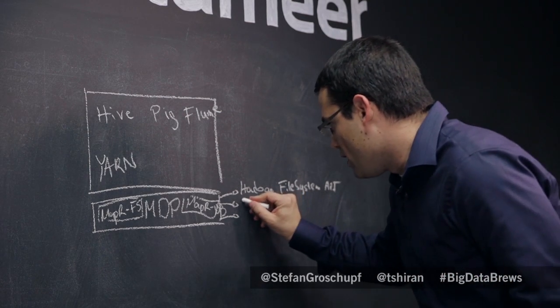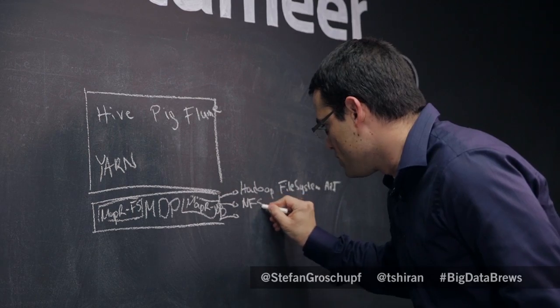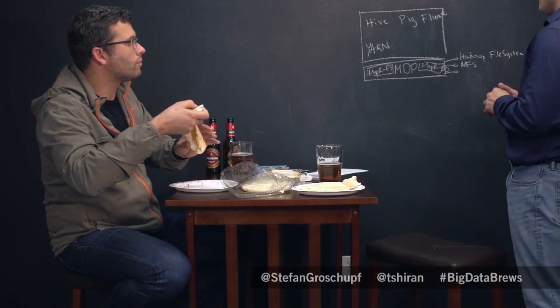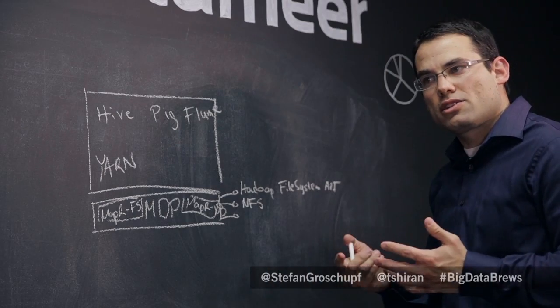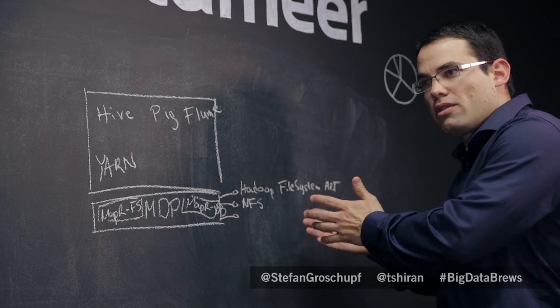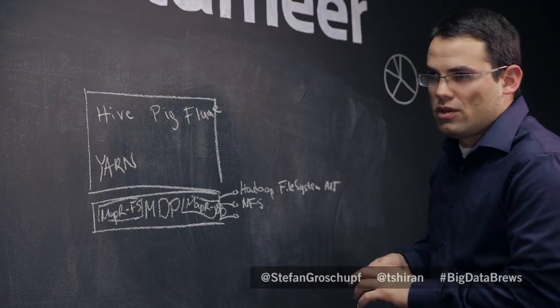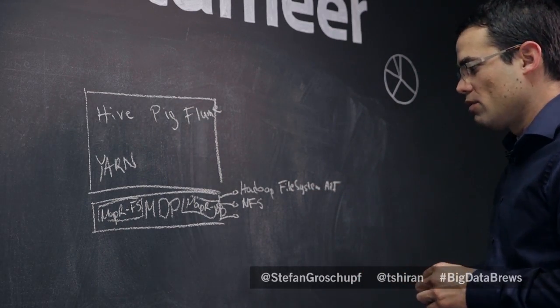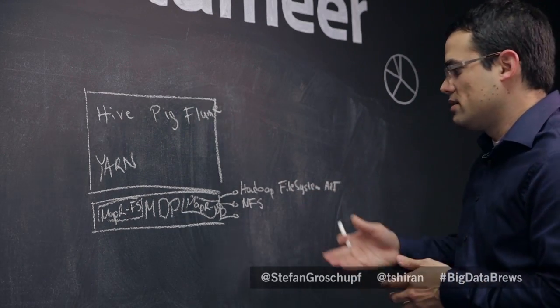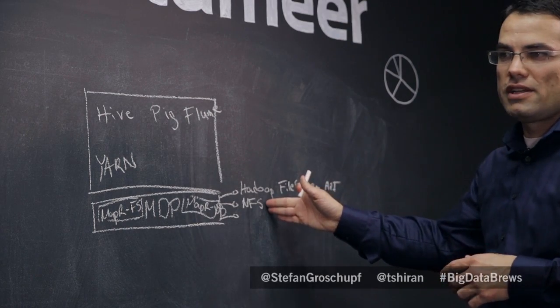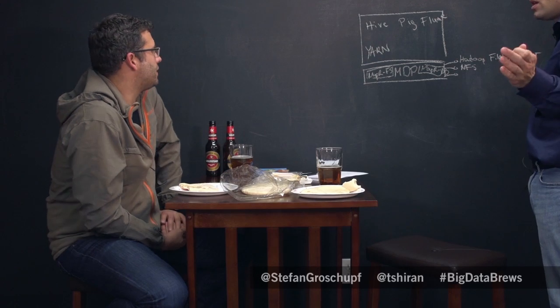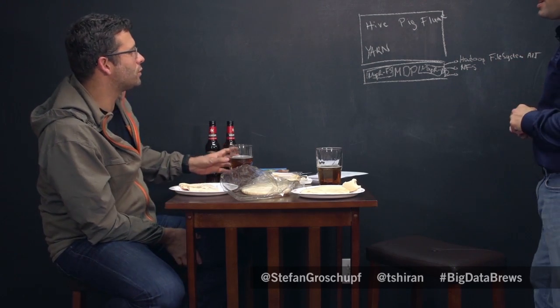And we also have an NFS interface here, which is a standard storage interface. Customers use that extensively for everything from loading data into the cluster. They could, for example, maybe export data from, a lot of our customers, they'll export data from Teradata using standard Teradata utilities. Or they'll use things like R and SAS. And because we expose a standard file interface, just like any network attached storage, you just mount the MapR cluster and you get one giant NAS. That's it. Wow. That's cool.